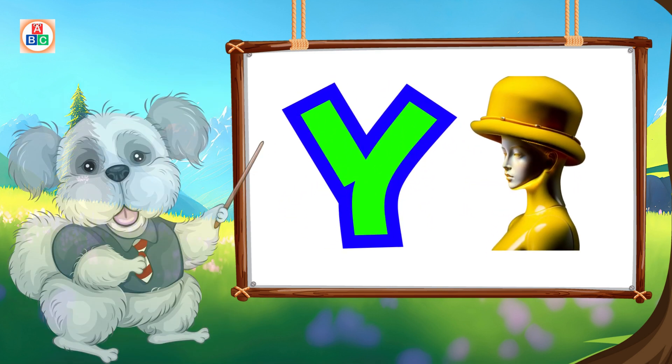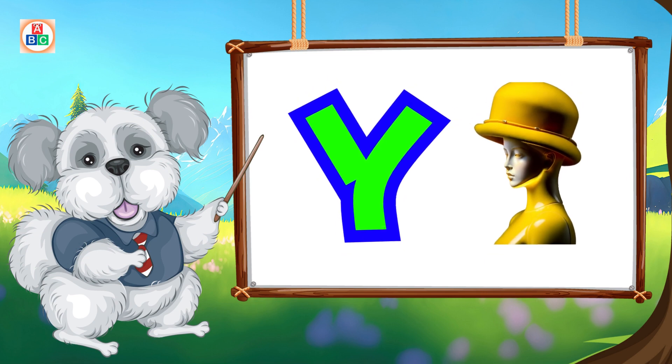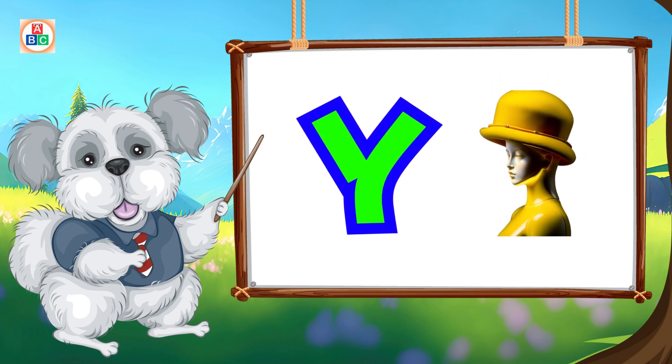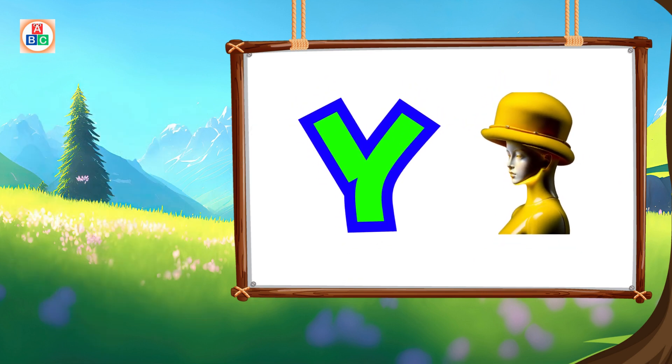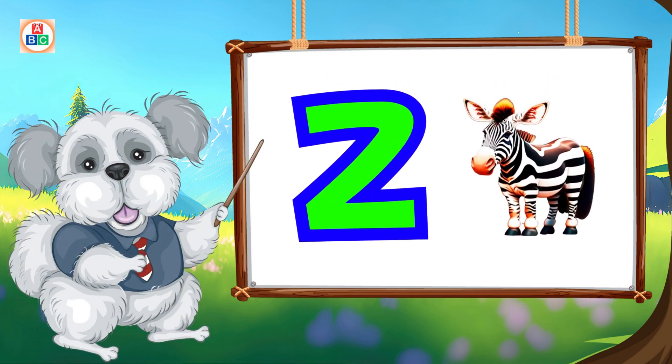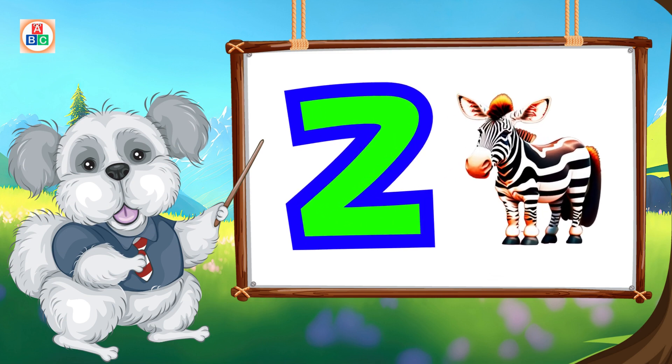Y is for yellow, ye-ye-yellow. Z is for zebra, z-z-zebra.